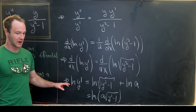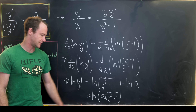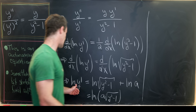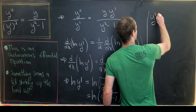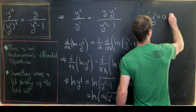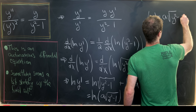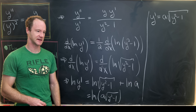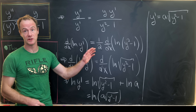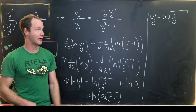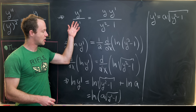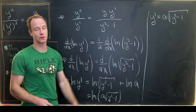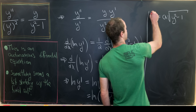We've got a pure logarithm on both sides, so we can equate the arguments: y prime equals a times the square root of y squared minus 1. We can now use separation of variables to solve this newly formed first-order differential equation. All of this had the effect of reducing the second-order differential equation to a first-order differential equation.